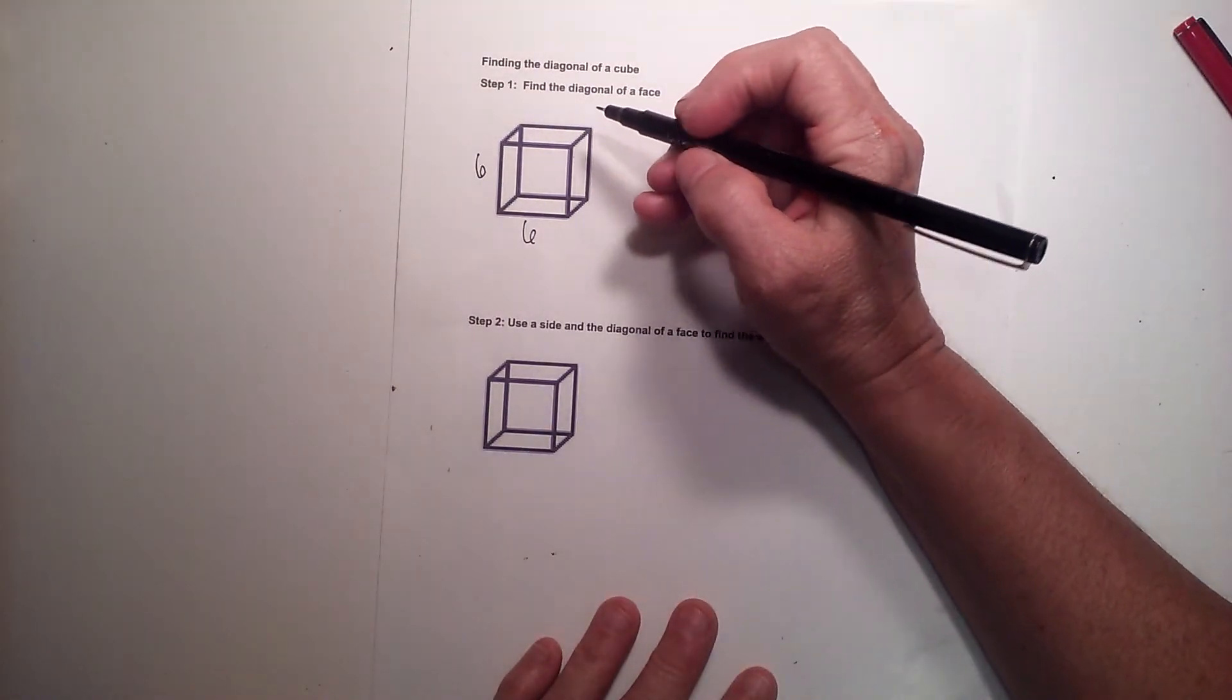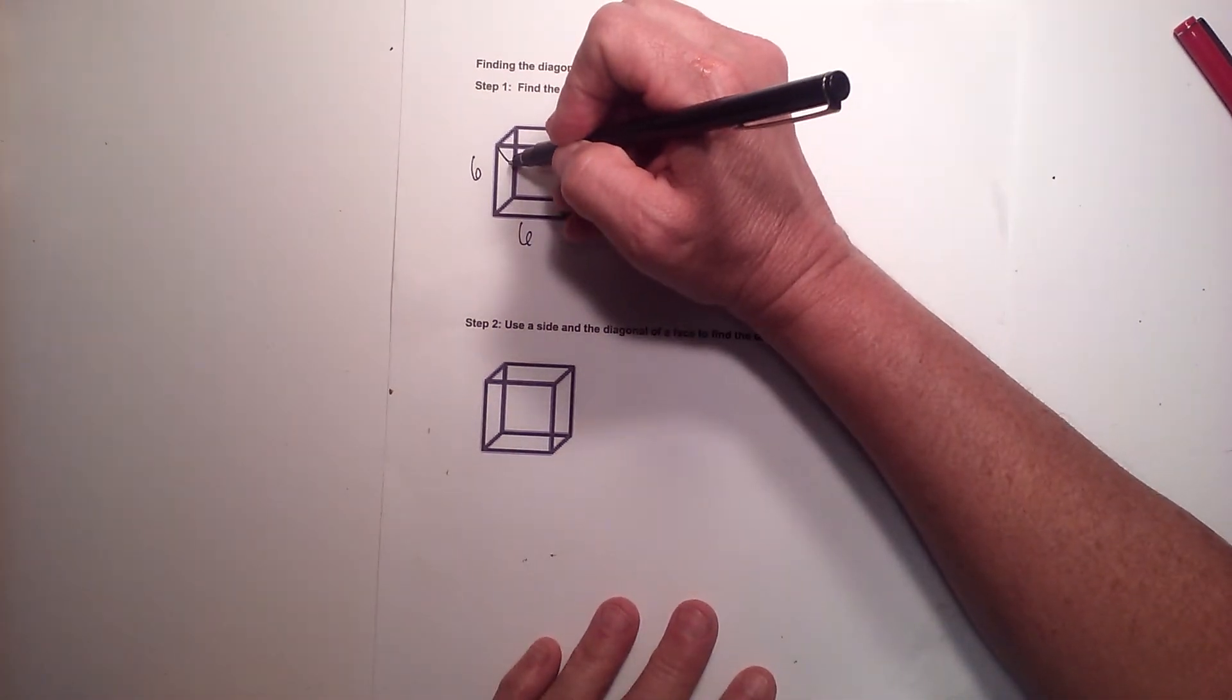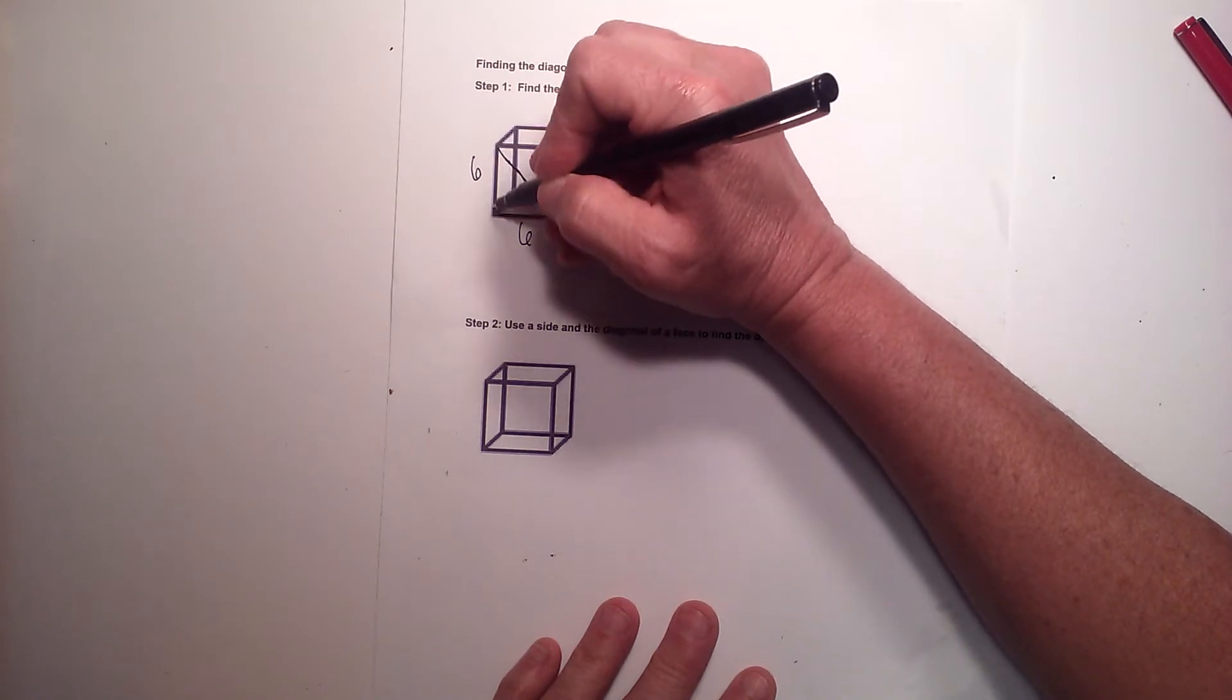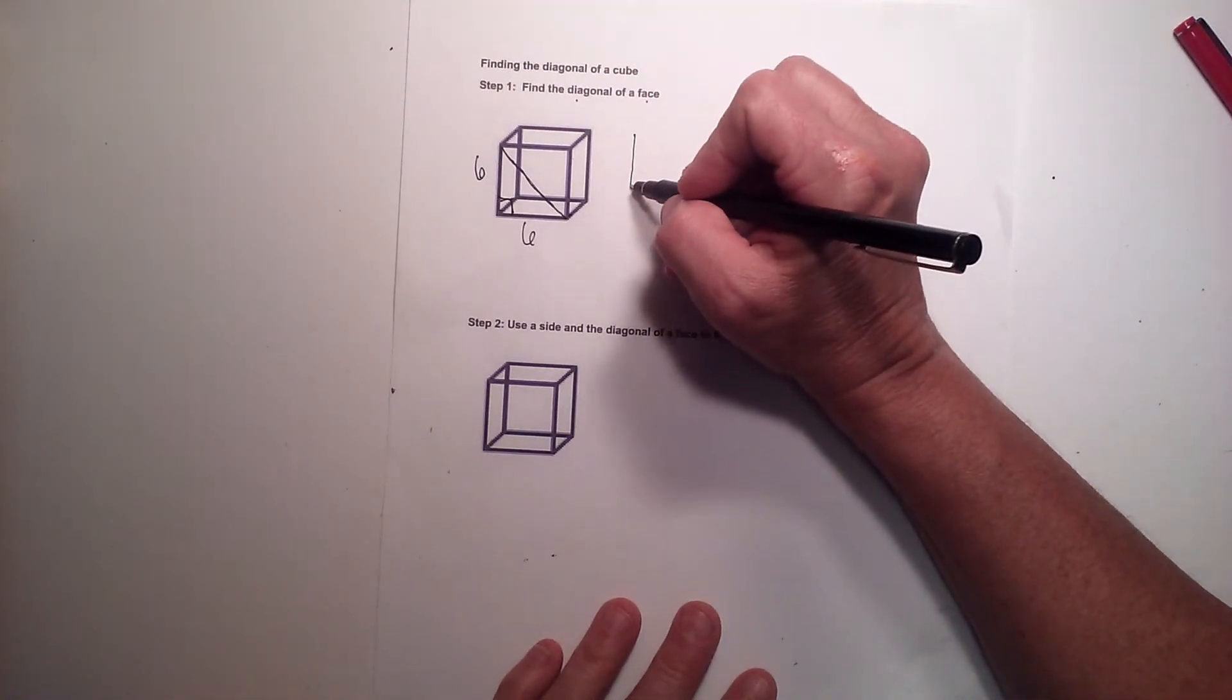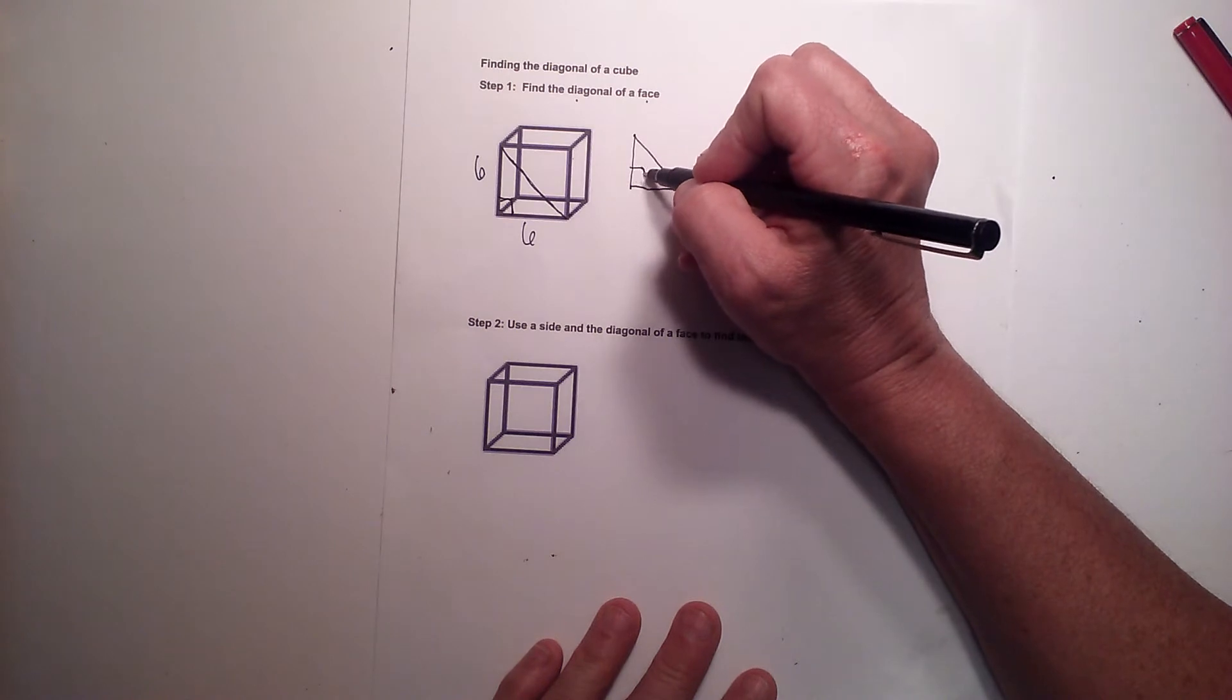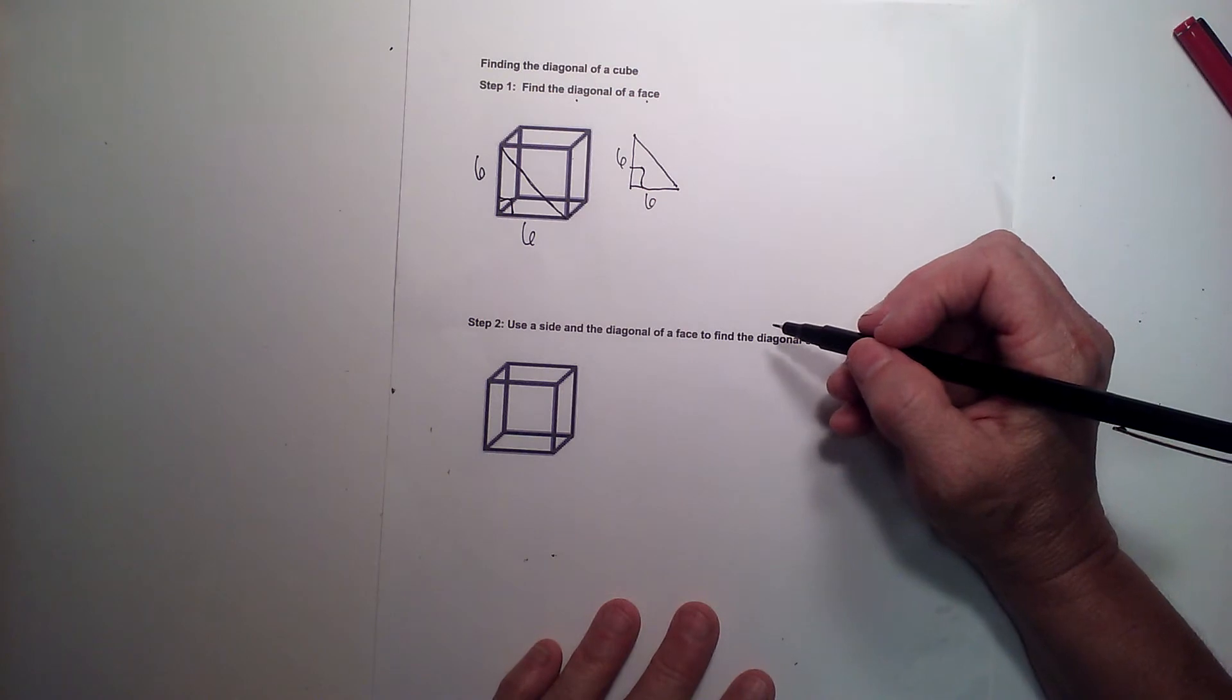So the first thing we're going to do is find the diagonal of a face. So let's take and draw it in. So we're finding this length on this front face. We know we have a right angle down here in the corner, so really we're dealing with a right triangle that I'll draw out here that has a side of six and another leg of six, and we don't know the hypotenuse.